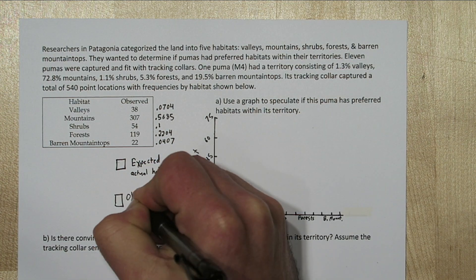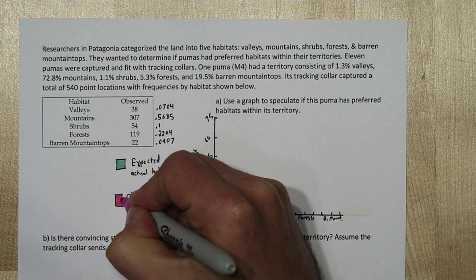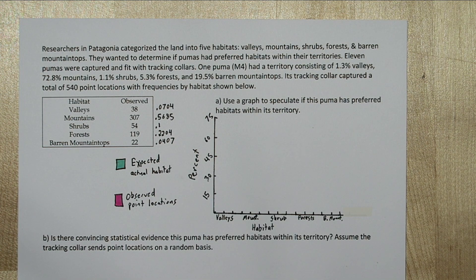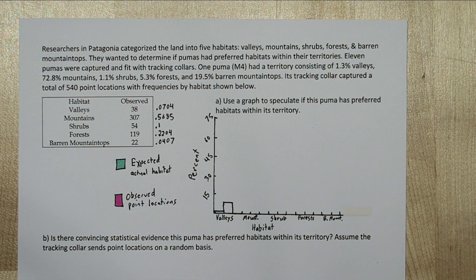And we'll use two different color bars to make our comparison easier. So 1.3% of the puma's habitat is actually valleys, but it spent about 7% of the time there.